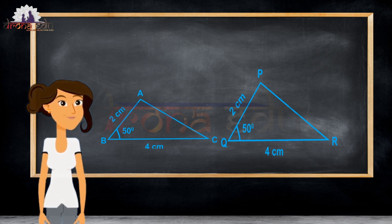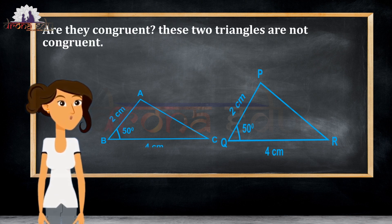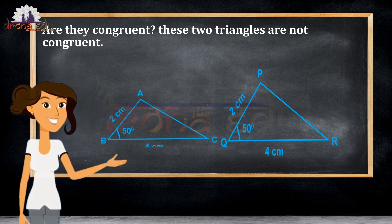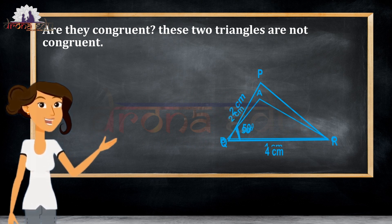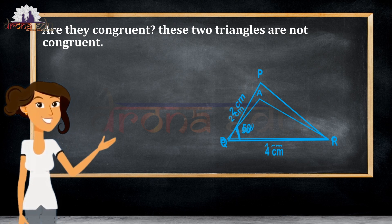Here, if you observe, are they congruent? No. They don't look like the same shape or same size. If I keep one above the other, they will not completely cover. So, these two triangles are not congruent.